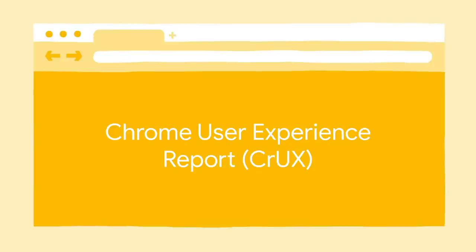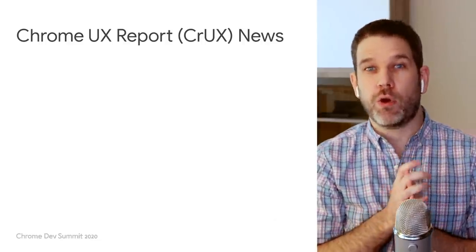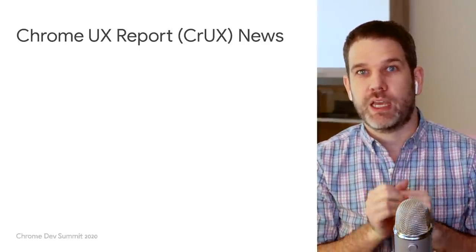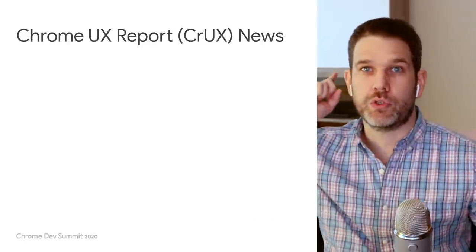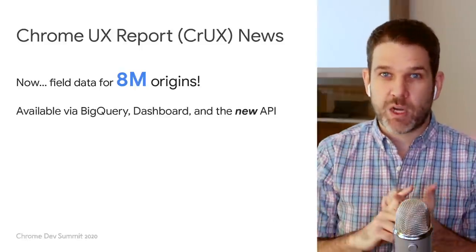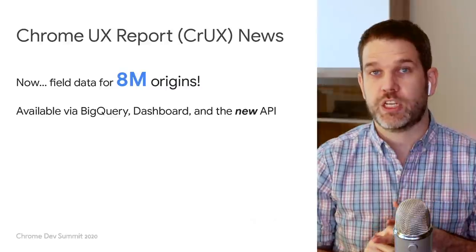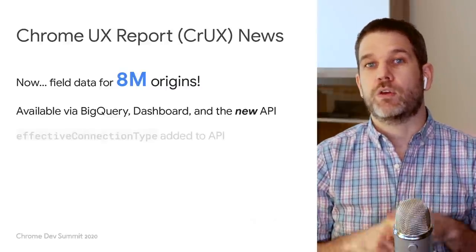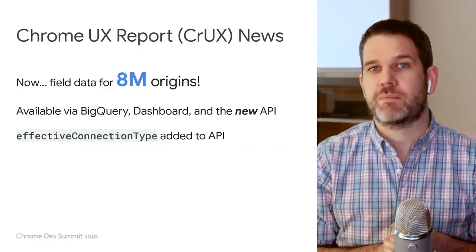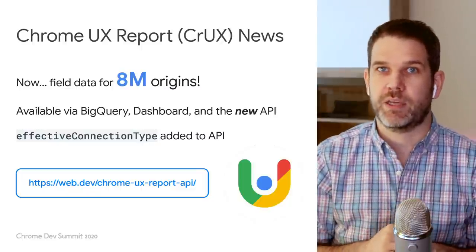Now we have a few updates on the Chrome user experience report. At each of our events, we're happy to update you on the growth of the CrUX corpus, and today we are announcing that we have field data for 8 million origins. The CrUX data is available via BigQuery, the CrUX dashboard, and the new CrUX API that was launched in June 2020. The effective connection type property was added to the payload, and if you're interested in this API, there's great documentation on how to make use of it.